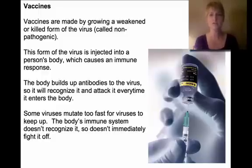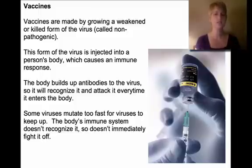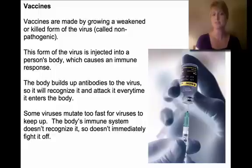Those antibodies remain in the body, so anytime that virus enters again, the immune system recognizes it and the antibodies rush in to kill it before it can do any damage. The only problem is that some viruses mutate very fast. You might get the flu, fight it off, and build antibodies, but because the flu mutates, the next time you get it it's a slightly different version. Your immune system doesn't recognize it, so you get sick again.